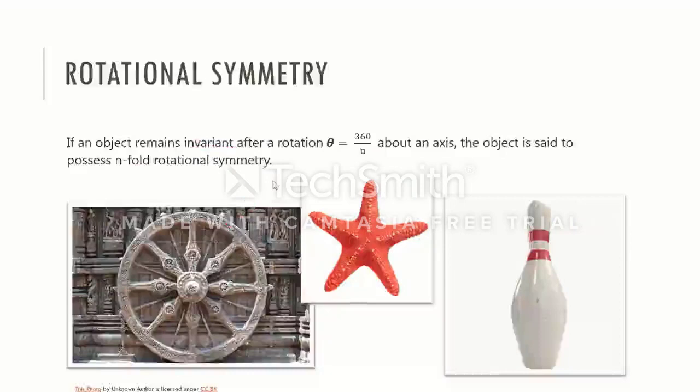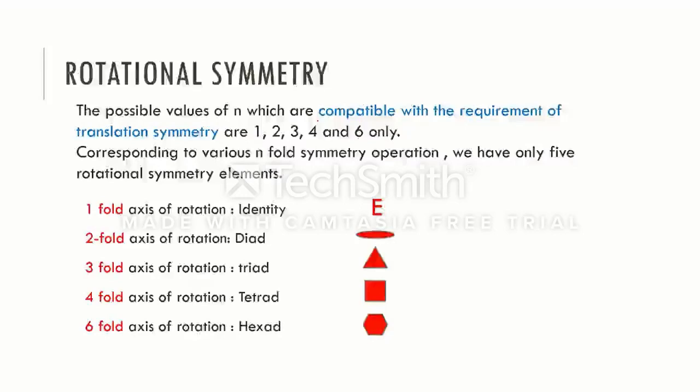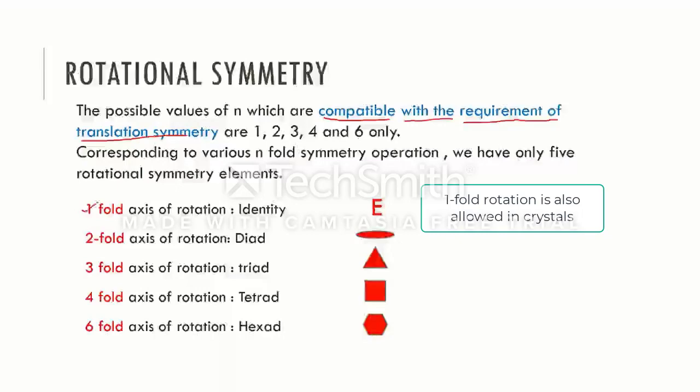In general, a macroscopic object may have any order of symmetry, but this is not true for crystals. Crystals can have only those symmetries which are compatible with translational symmetry. Therefore, the order of rotational symmetry in crystals is limited to 2, 3, 4, and 6. But the order of rotational symmetry cannot be 5 or higher than 6.